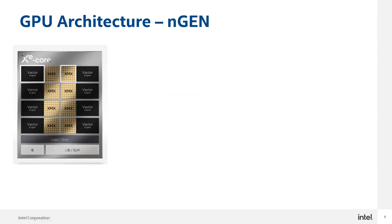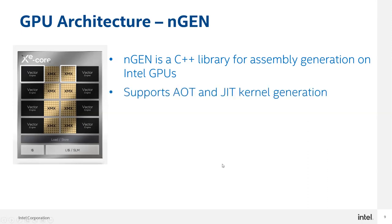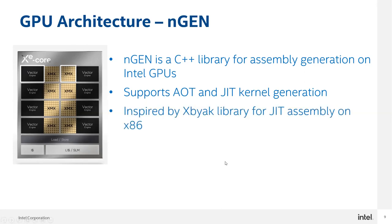For the assembly side of things, we have a C++ library for assembly generation on Intel GPUs. It supports both doing things ahead of time or just in time. It's based on a library called XBYAK that does the same thing for x86 instruction sets, where you can call a function and it will emit the corresponding binary associated with the assembled instruction. You can use that to implement a just-in-time assembler — which is actually what we did for CPU-side optimization.